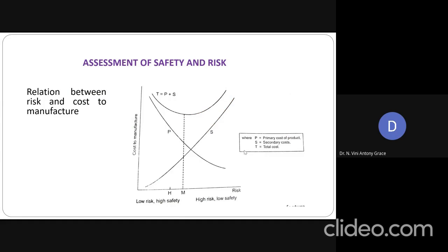This is how the total cost is determined. There is a graph plotted between risk and cost to manufacture, with two sectors: one is low risk and high safety, the other is high risk and low safety. When risk is low and we are incorporating more safety measures, the primary cost will be high because we have to spend a lot on incorporating the safety concepts.